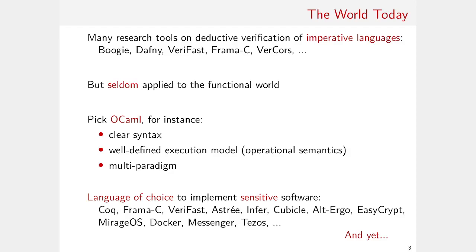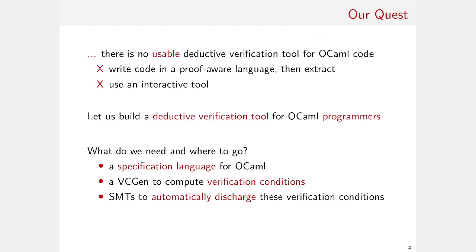So it seems like OCaml code is a good target for deductive verification, and yet there is no easy-to-use deductive verification tool that tackles OCaml code. The two options nowadays would be to write the code in a proof-aware language and then extract it — which means rewriting entire code bases just for formal verification — or to use an interactive tool, which is hardly the choice for the regular programmer.